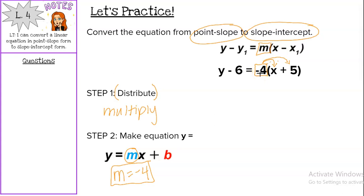We have negative 4 times x, which is negative 4x. And we have negative 4 times positive 5. Remember, we take that sign with the number. Negative times a positive is a negative, and 4 times 5 is 20. And then this y minus 6 piece just stays because we haven't done anything with it just yet.